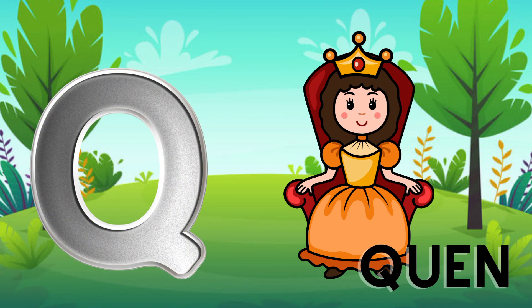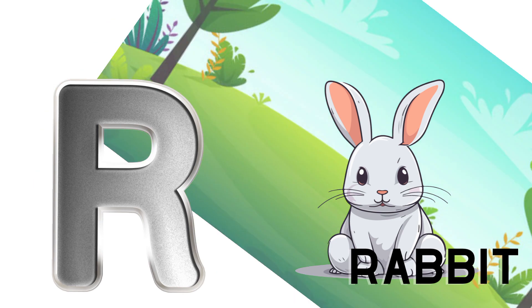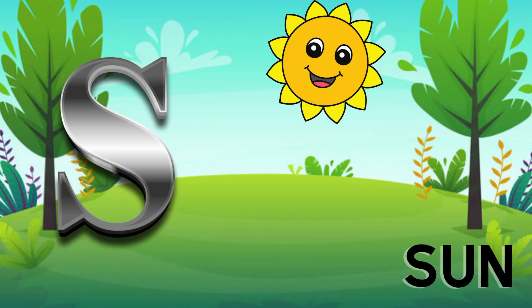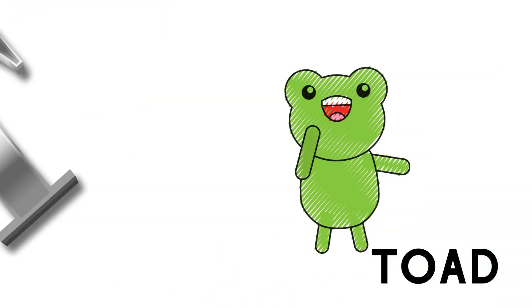Q is for queen, q-q-queen. R is for rabbit, r-r-rabbit. S is for sun, s-s-sun. T is for toad, t-t-toad.